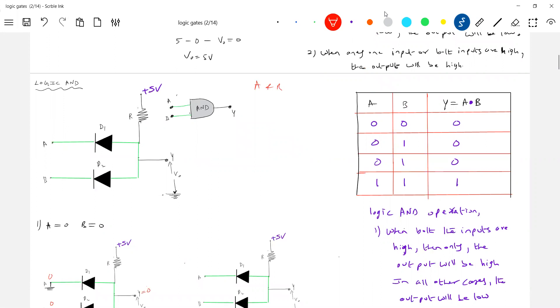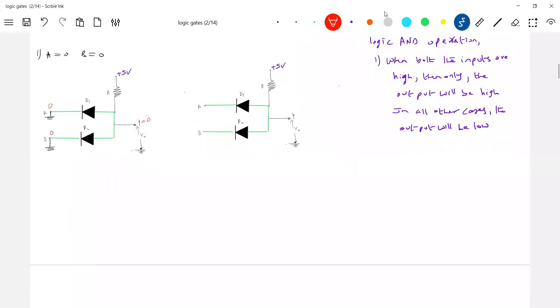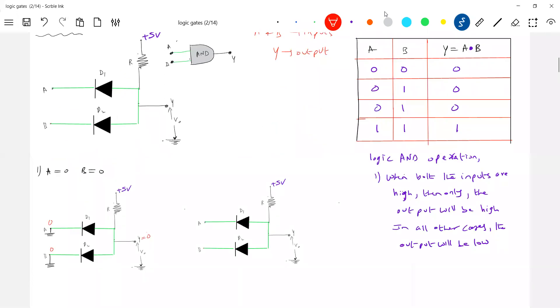So, what are A and B are the inputs here? Again, some of you are asking, what are the inputs? And what is Y? An output. So, next, again, we'll make, what is our next condition?